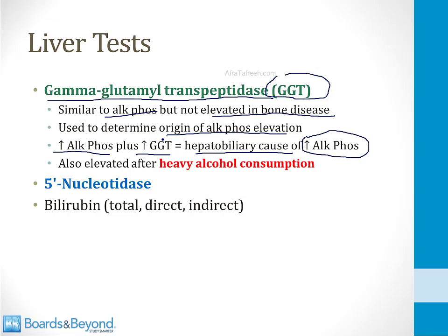Another special feature of the GGT blood test is that it becomes elevated after heavy alcohol consumption, so you can measure this level to determine whether patients have been drinking. There's a related enzyme called 5'-nucleotidase, which is just like GGT — it is another enzyme that can be used to determine the source of an Alkphos elevation.